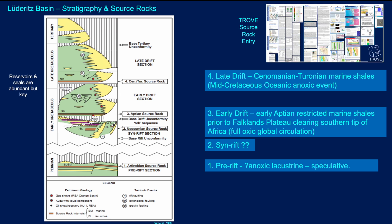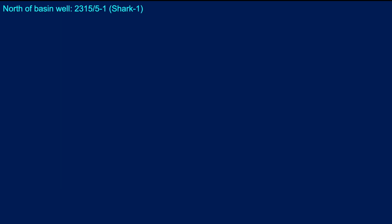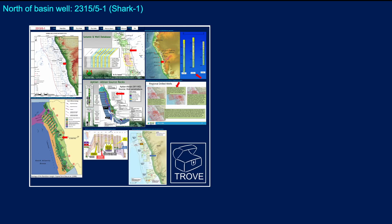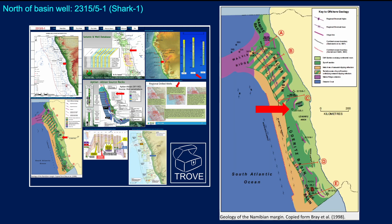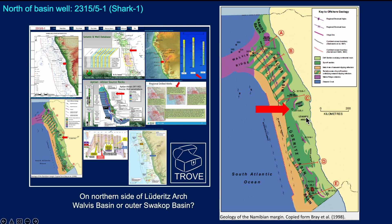This is our entry on the geochemistry for Namibia in Trove — lots of material compiled, and that's only part of what we're showing. North of the basin, we have the Shark 1 well, 2315-51, and here's the entry we have in Trove for that particular well. Here's the location of it — it lies to the north of the Lüderitz Arch and has more affinities with the Walvis Basin or the outer Swakop Basin rather than the Lüderitz.